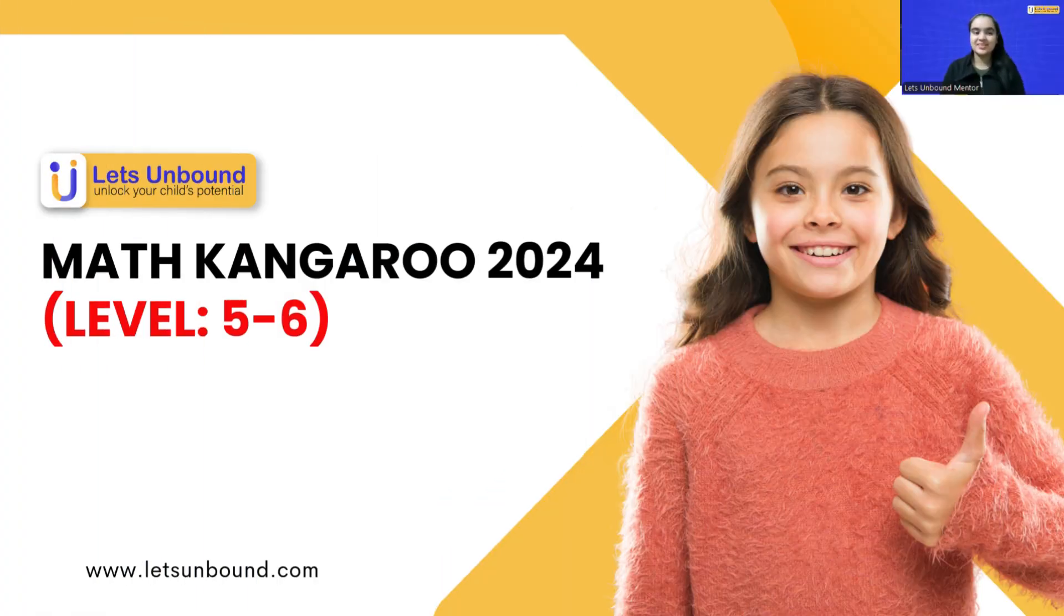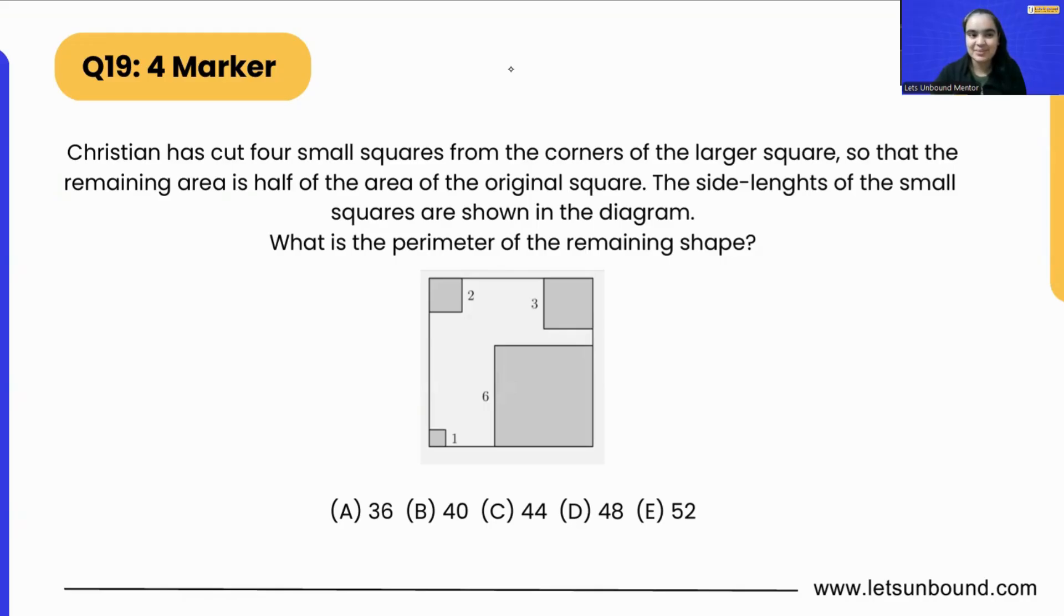Hello everyone, so today we are going to discuss question 19 that came as a four marker, and it's a really interesting and very easy question as well. Let's see: Christian has cut four small squares from the corners of the large square so that the remaining area is half the area of the original square. The side lengths of the small squares are shown in the diagram. What is going to be the perimeter of the remaining shape?